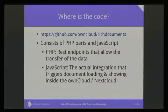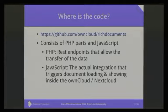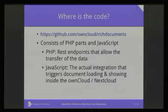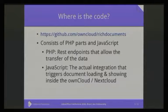The code — the reference implementation — is on GitHub at owncloud/richdocuments. It contains two main parts: one is the part that provides the endpoints allowing downloading and uploading of documents, and the other part is JavaScript. As a provider of the documents, you want to show it to the user in the end, which is why the JavaScript is there.